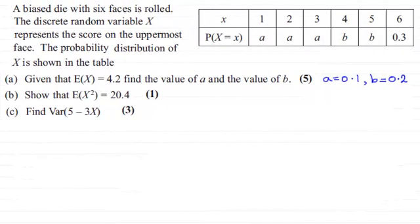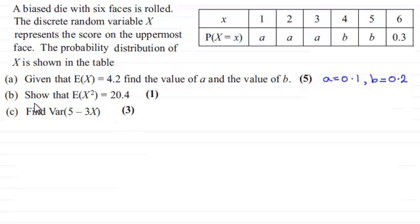Hi there. In this video I'm going to be showing you parts B and C of this question. If you had watched my previous video, we were asked to find out the values of A and B for this random variable X from this probability distribution table, and we found out that A was 0.1 and B was 0.2. We're now asked to show that E of X squared equals 20.4 for one mark, and in part C, find the variance of 5 minus 3X for three marks. If you'd like to have a go, I'll just give you a moment to pause the video.